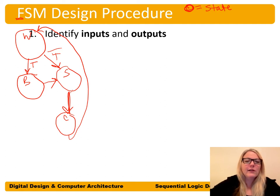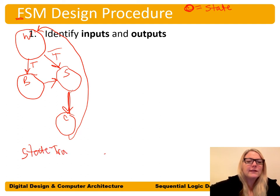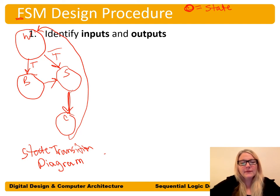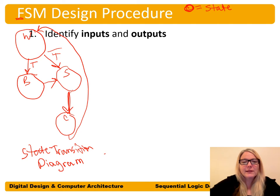This is called a state transition diagram. It shows the states and the transitions between those states. Now, it's cool that we have a state transition diagram, but we need to turn it into logic. Our first step is to make a state transition table, also called the next state table.